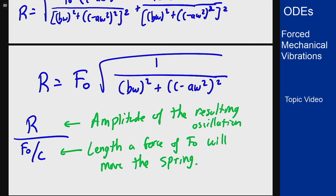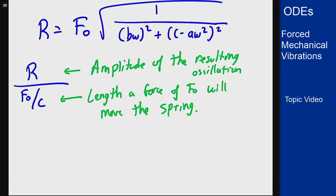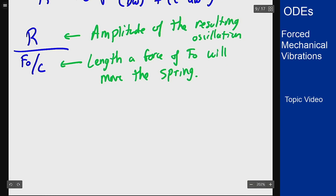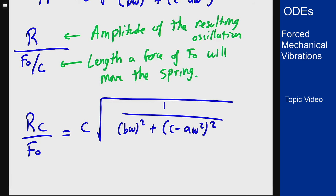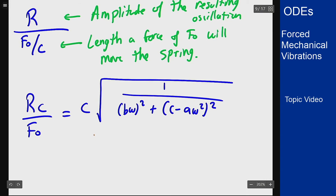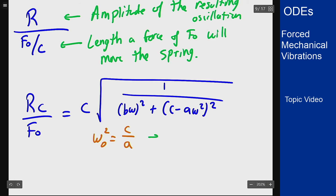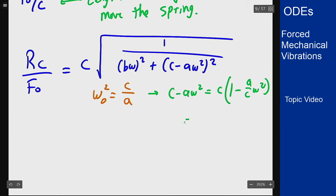To get into that form I divide both sides by f0 and multiply both sides by c, giving r c over f0 equals c times the square root expression. I can then use the natural frequency omega 0 squared equals c over a to write c minus a omega squared as c times 1 minus omega squared over omega 0 squared, allowing me to rewrite the expression under the square root with c squared inside.